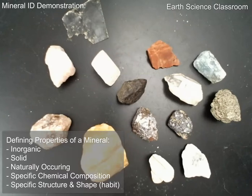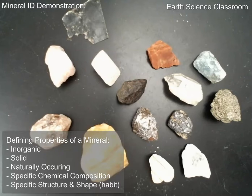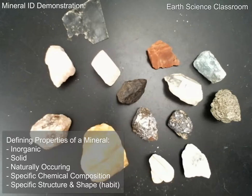A mineral has five characteristics or five defining properties that it must have. It must be solid, must be inorganic, naturally occurring, have a certain crystalline structure, and a certain chemical composition. Minerals are made up of atoms. To define a mineral is to know those five characteristics, those five properties.